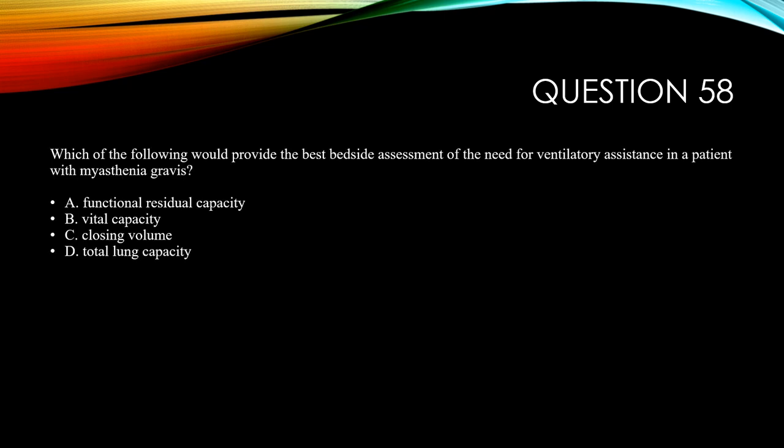Question 58. Which of the following would provide the best bedside assessment of the need for ventilatory assistance in a patient with myasthenia gravis? A, functional residual capacity. B, vital capacity. C, closing volume. And D, total lung capacity.